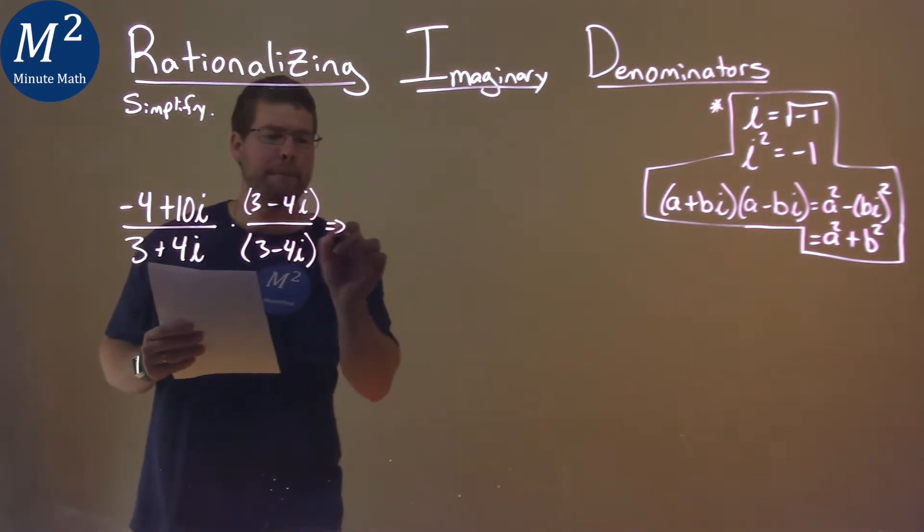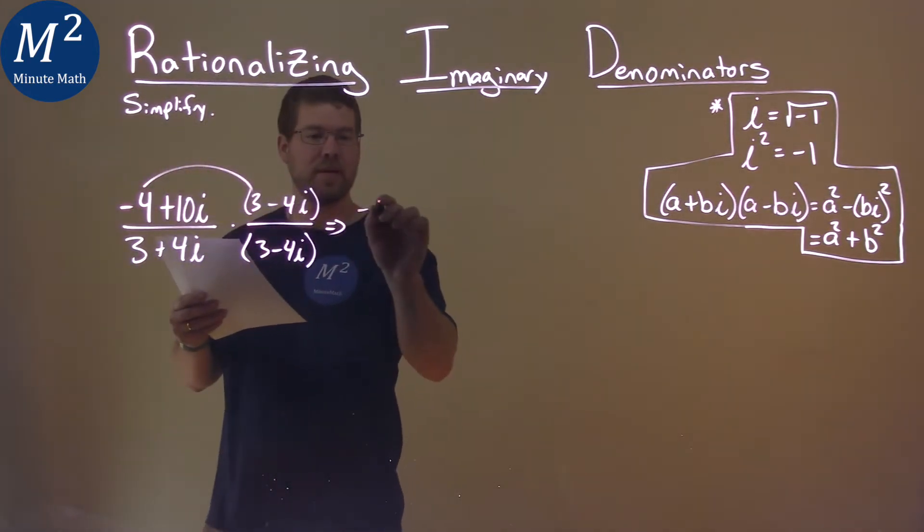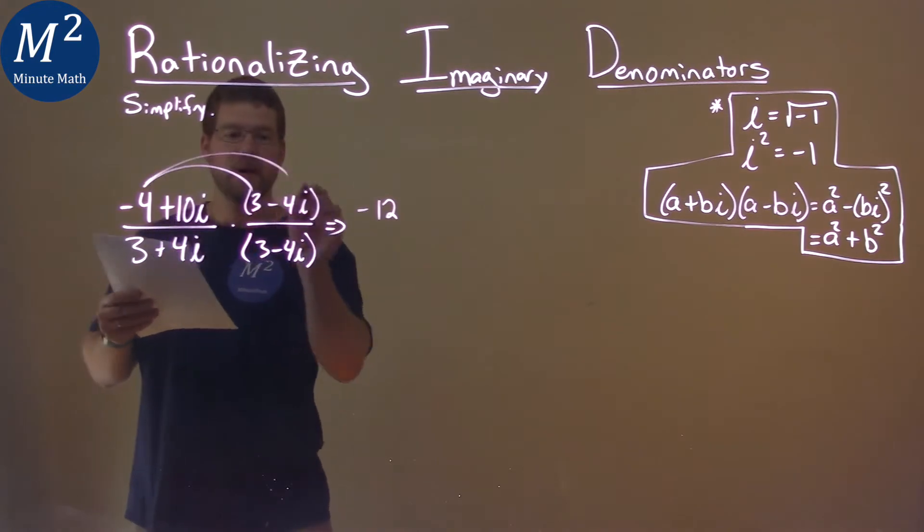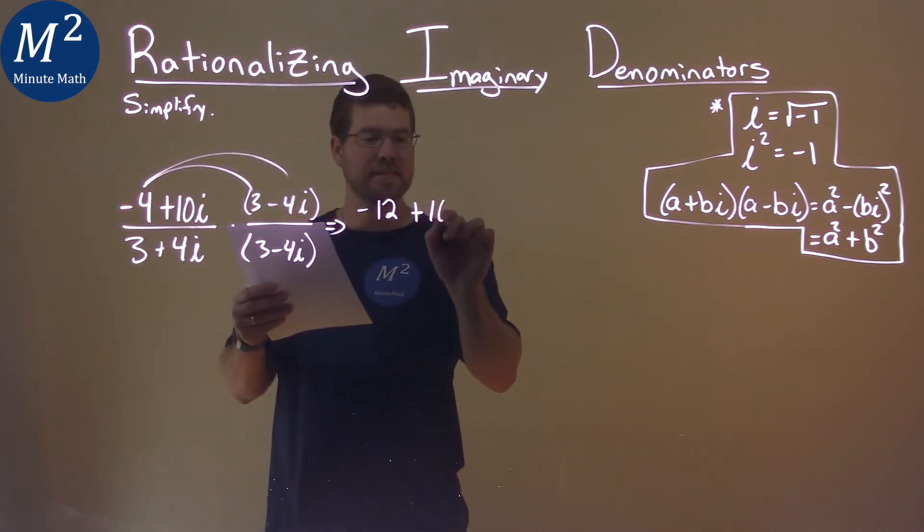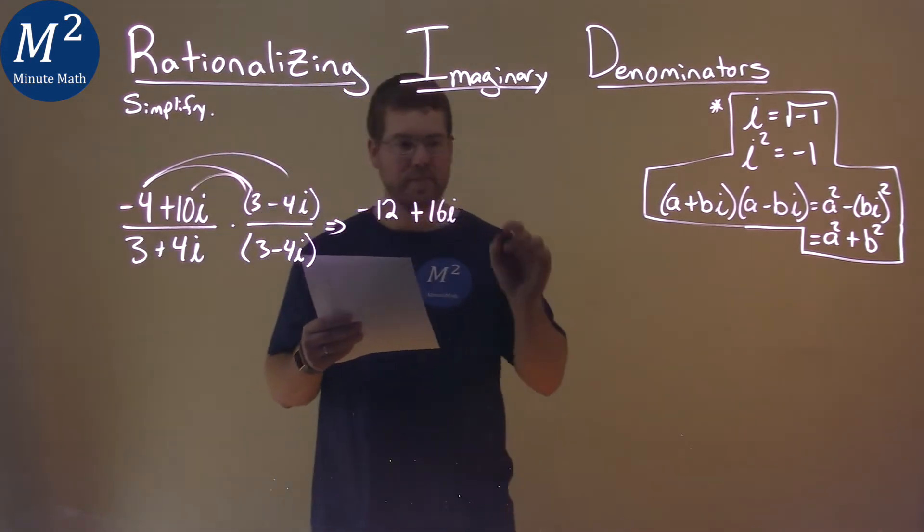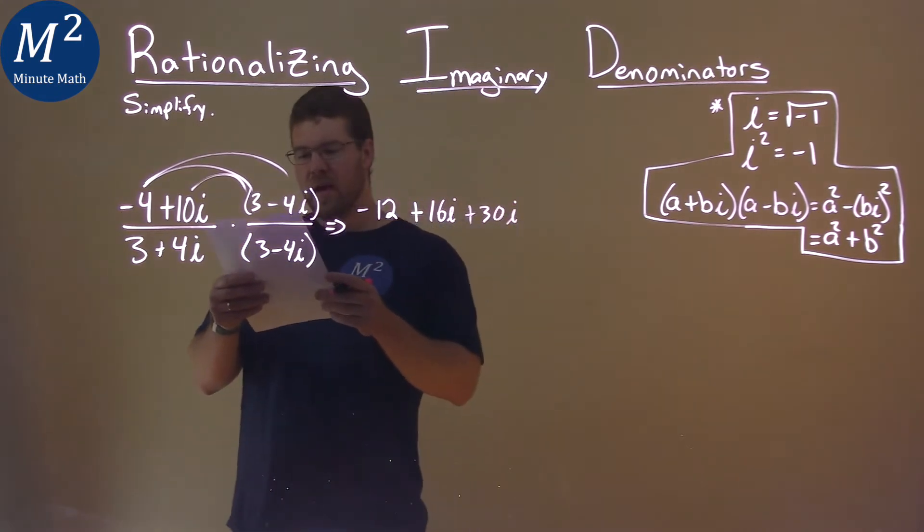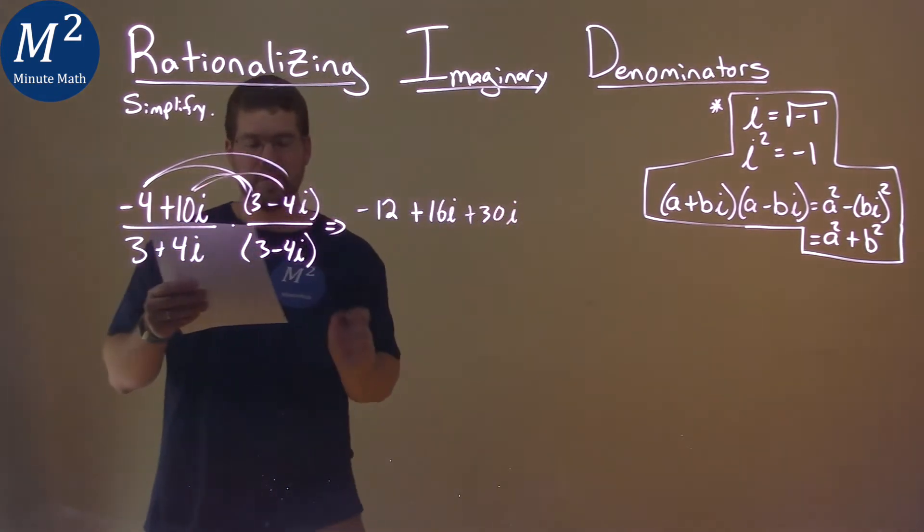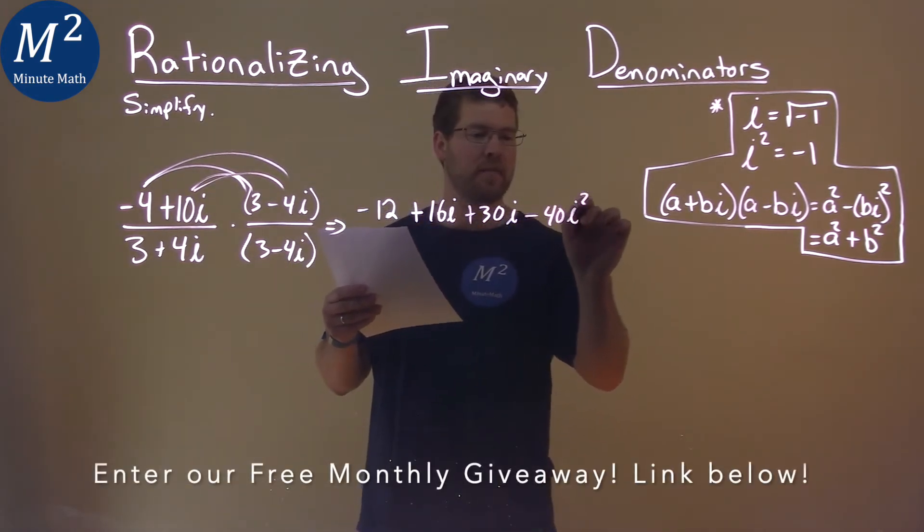Now let's go multiply this out. Negative 4 times 3, negative 12. Negative 4 times minus 4i is positive 16i. 10i times 3 is 30i, and then 10i times minus 4i is minus 40i squared.